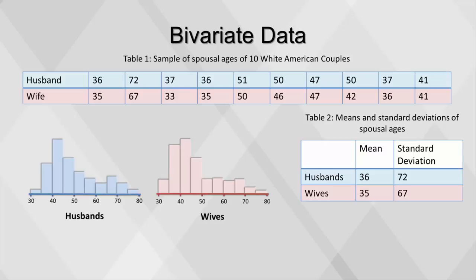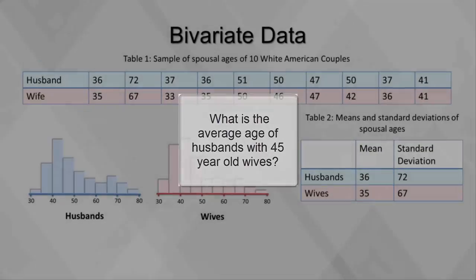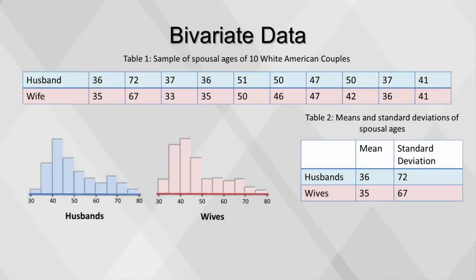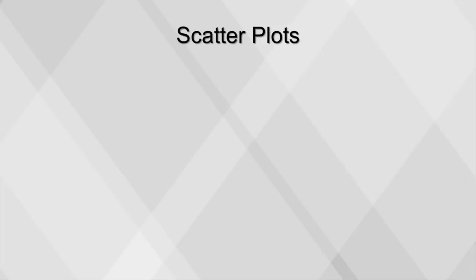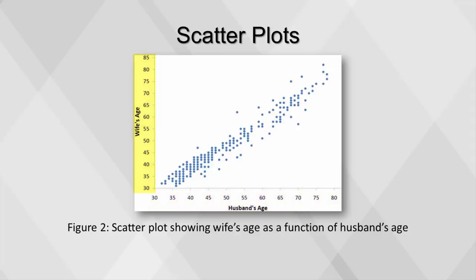Another example of information not available from the separate descriptions of husbands and wives' ages is the mean age of husbands with wives of a certain age. For instance, what is the average age of husbands with 45-year-old wives? We don't know the relationship between the husband's age and the wife's age. We can learn much more by displaying the bivariate data in a graphical form that maintains the pairing. Figure 2 shows a scatter plot of the paired ages. The x-axis represents the age of the husband and the y-axis the age of the wife. There are two important characteristics of the data revealed by Figure 2.